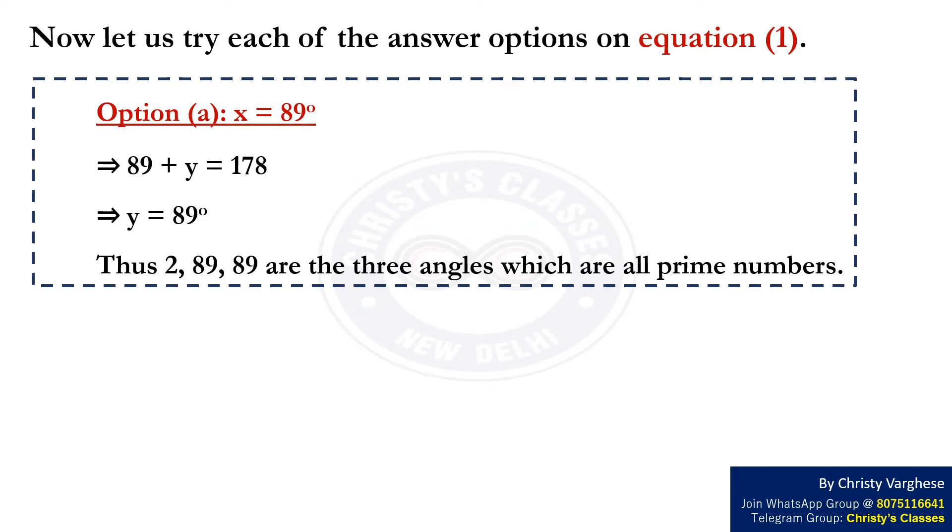This implies 89 plus Y equals 178, which implies Y equals 89 degrees. Thus, 2, 89, and 89 are the three angles, which are all prime numbers.